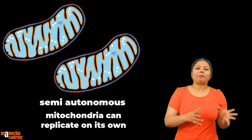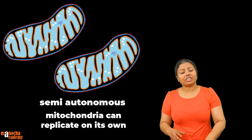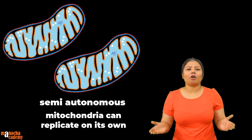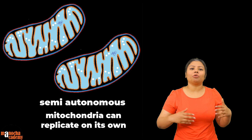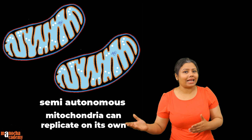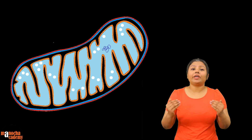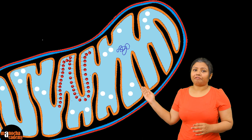Mitochondria is dependent on the cell for the source of glucose from which it will derive energy, but it is also capable of replicating itself and producing its own proteins, enzymes and energy. Apart from these structures, there is another extremely important structure seen on the inner membrane of the mitochondria — and those are the F particles.